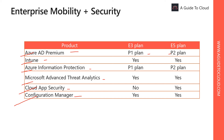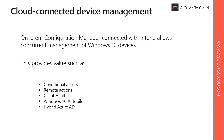Configuration Manager, or SCCM, is an on-premises product used to manage Windows and macOS PCs and servers. It has a rich set of capabilities that allow you to highly customize the following areas: application management, operating system deployment, software update management, and device compliance. This is part of both E3 and E5 plans.